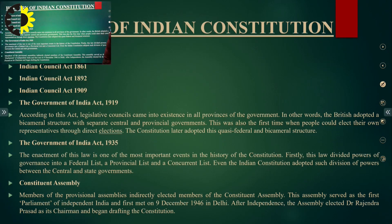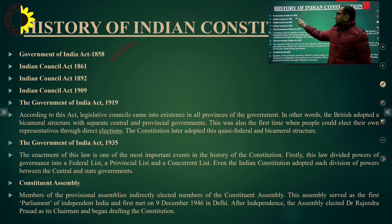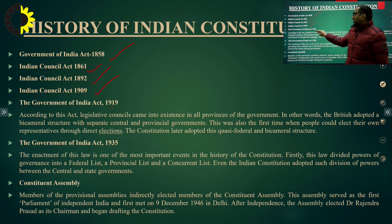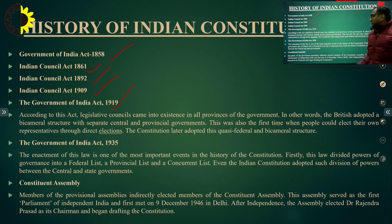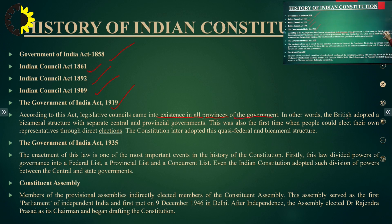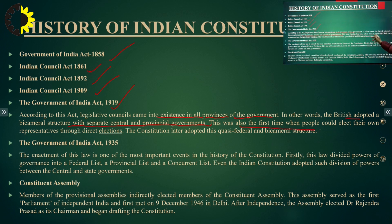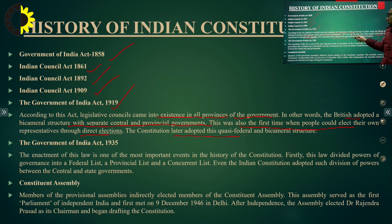Let us dive into the history of the Indian constitution. A Government of India Act came in 1858, followed by Indian Council Acts in 1861, 1892, 1909, and 1919. According to these acts, legislative councils came into existence in all provinces. The British adopted a bicameral structure with separate central and provincial governments. This was also the first time people could elect their own representatives through direct election. The constitution later adopted this quasi-federal and bicameral structure.